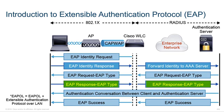Once the identity has been verified, both sides agree on which EAP type to use, since there are several different options. The conversation is then authenticated on each end. If done appropriately, we achieve EAP success — we've authenticated both the supplicant and the server, and the supplicant is then allowed to transfer and exchange information with internal resources.